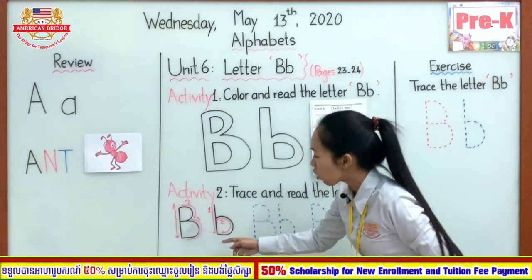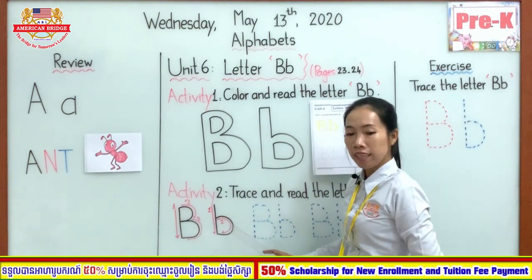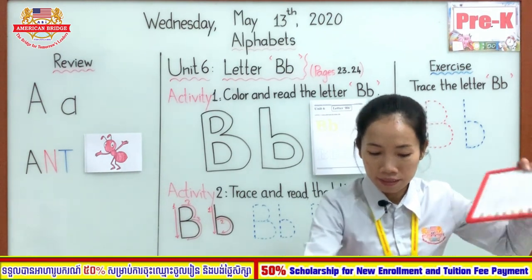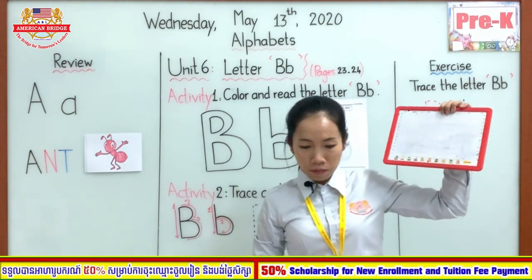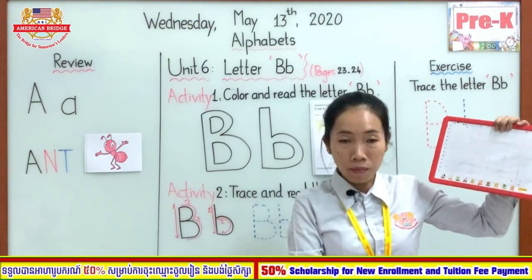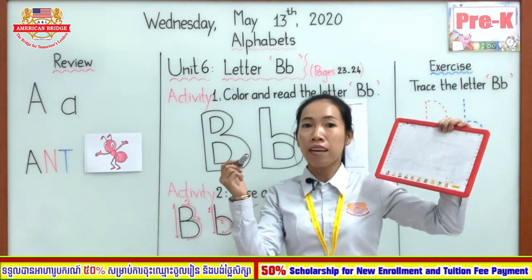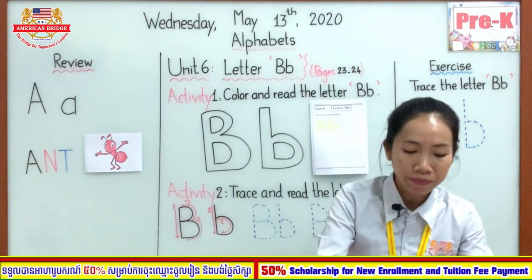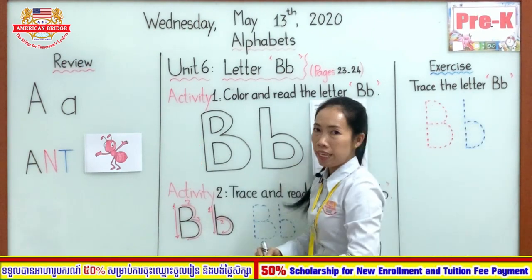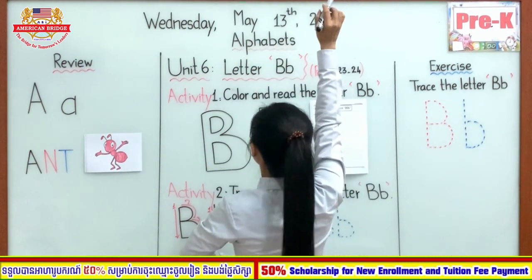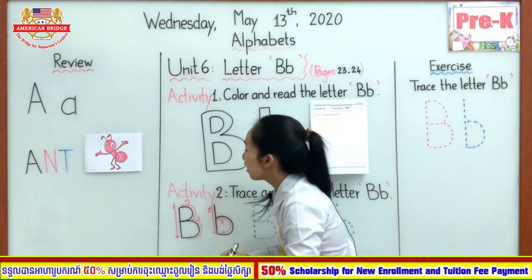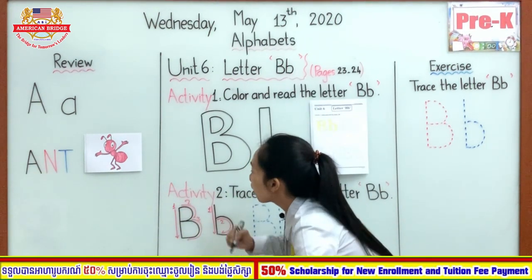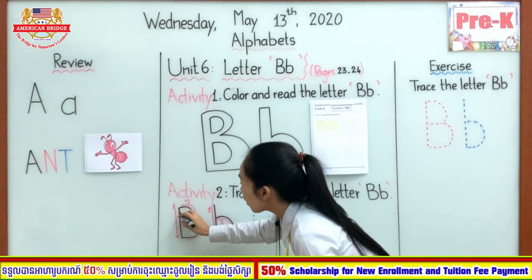Okay. Now you see capital B and small B. Now please take out your small writing board and your marker. Try with teacher together. Look and try. Letter B. Start from the top to the bottom. The first step — there are three steps. The first step is start from the top to the bottom.